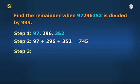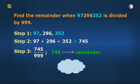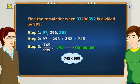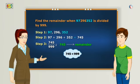So, dividing this 745 by 999, 745 is itself the remainder, as 745 is smaller than 999. Correct answer ma'am. Yes, Savali.